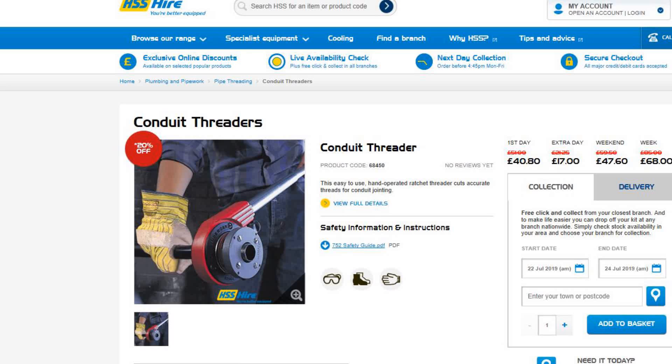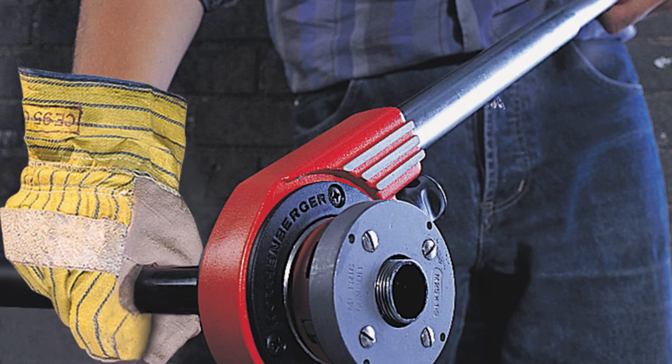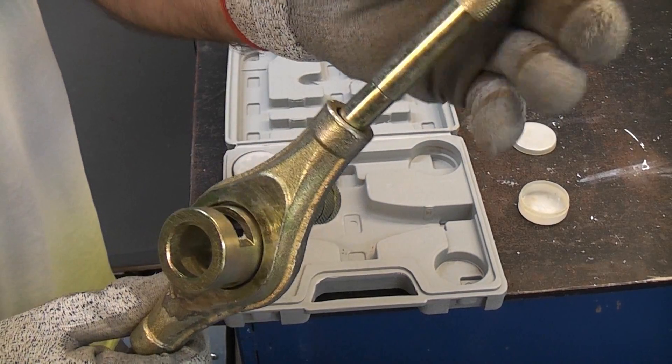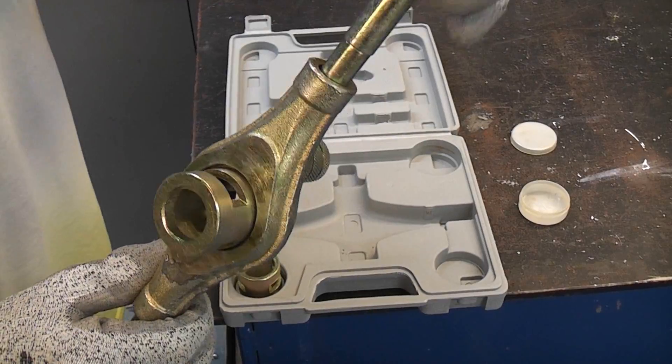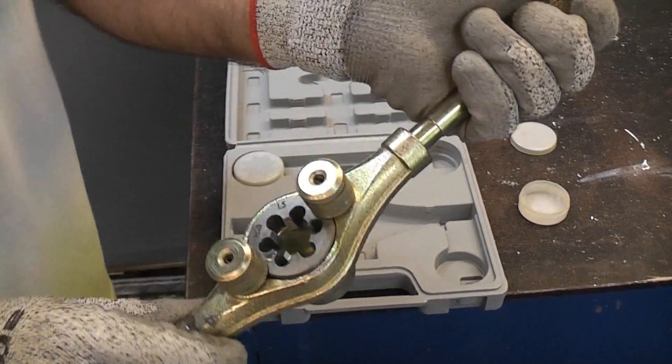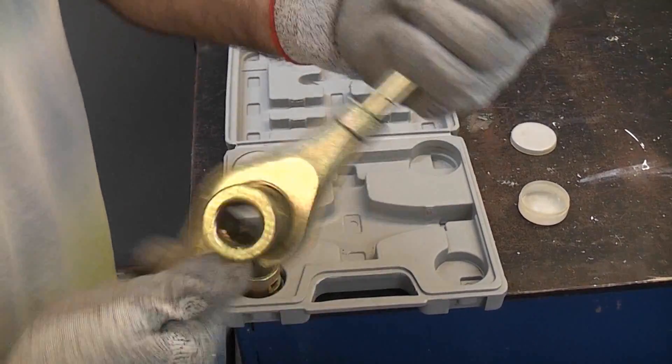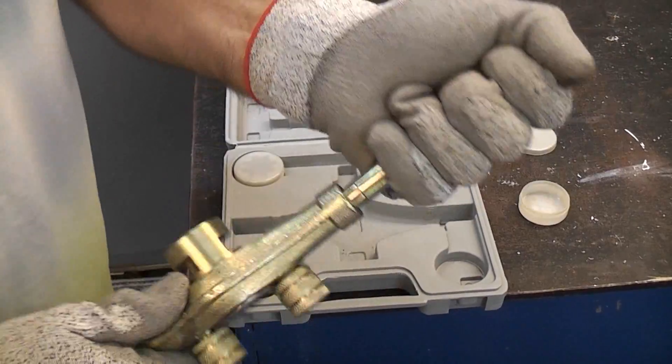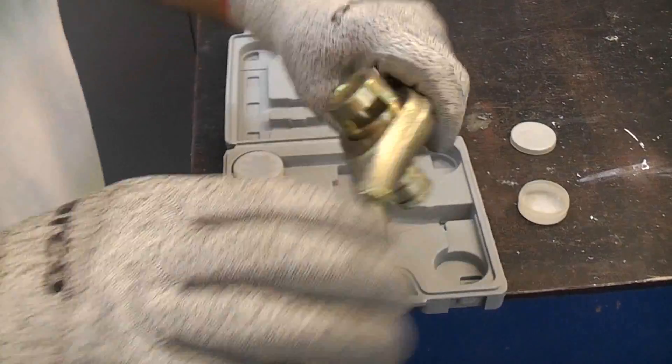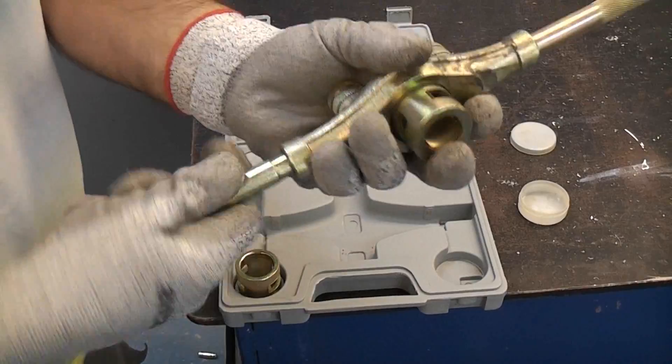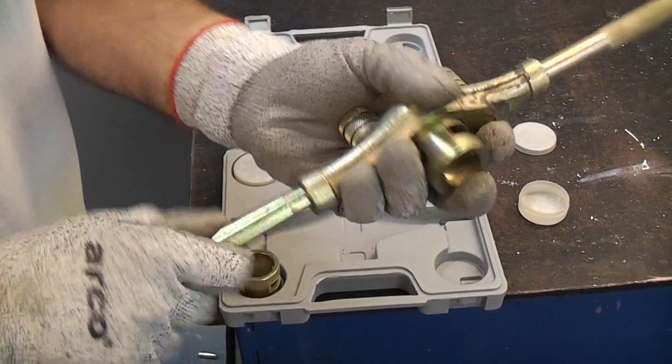You can actually hire a similar kit from HSS. The ones at HSS are actually a ratchet version. We often use a similar thing on site as well for threading pipework, although we do use different dies for that.